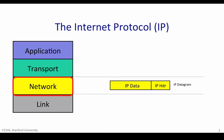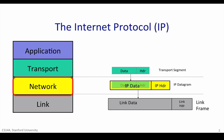IP datagrams consist of a header and some data. When the transport layer has data to send, it hands a transport segment to the network layer below. The network layer puts the transport segment inside a new IP datagram that it creates. IP's job is to deliver the datagram to the other end of the Internet. But first, the IP datagram has to make it over the first link to the first router. So IP sends the datagram to the link layer that puts it inside a link frame, such as an Ethernet packet, and then ships it off to the first router.